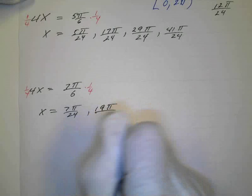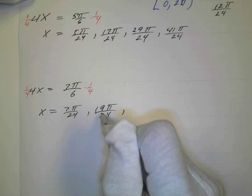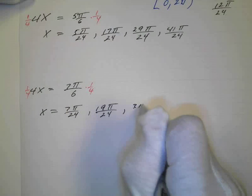And if I add another 12 to that, that's going to be 21, 31π over 24.